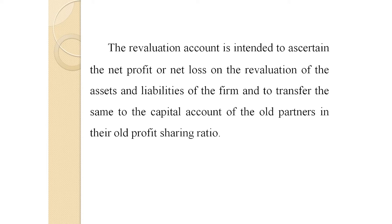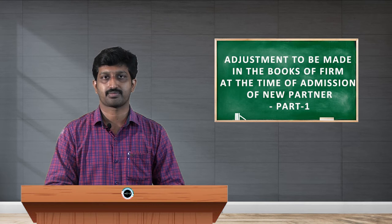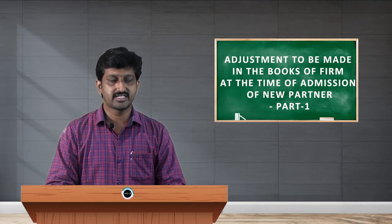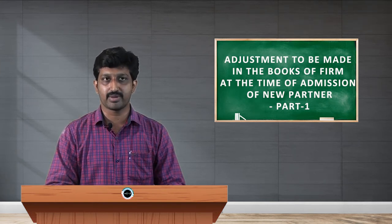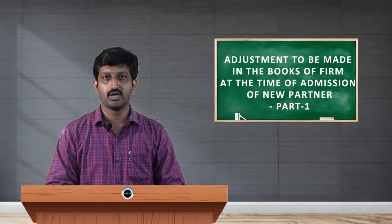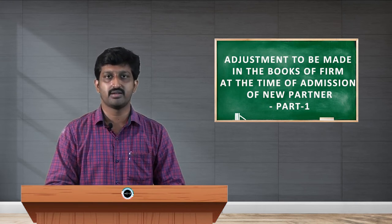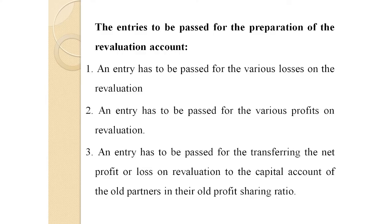The net profit or net loss on revaluation is transferred to the capital account of the old partners in their old profit sharing ratio. Let us discuss the journal entries to be passed for the preparation of the revaluation account. Normally we follow three categories of journal entries: an entry for the various losses on revaluation, an entry for the various profits on revaluation, and an entry for transferring the net profit or net loss on revaluation to the capital account of the old partners in their old profit sharing ratio.